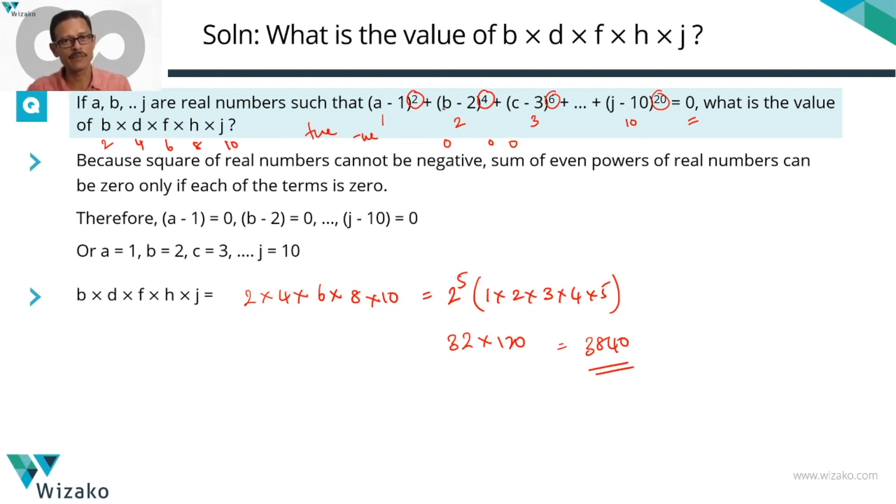Which means each of these expressions—(a - 1)², (b - 2)⁴—each one should be 0, translating to the fact that a = 1, b = 2. Then the rest of it is just mechanics.